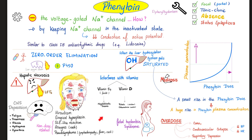So it has a gazillion side effects, such as hepatic necrosis. It stimulates the P450 cytochrome system in the liver, which causes liver transaminases to go up, such as AST and ALT. And since it inhibits sodium channels, it will decrease the activity of the brain — CNS depression. It also interferes with the absorption of vitamin B9, which is folate, and vitamin D.